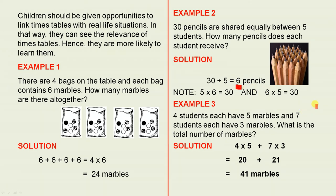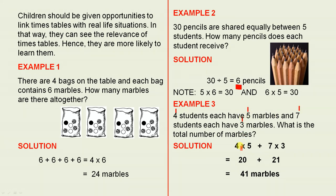4 students each have 5 marbles and 7 students each have 3 marbles. What is the total number of marbles? The solution: 4 times 5 plus 7 times 3, which is 20 plus 21, and that's 41 marbles in total.